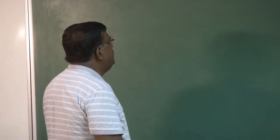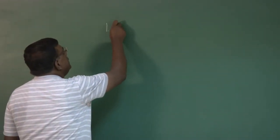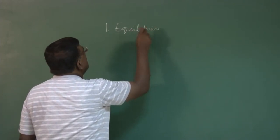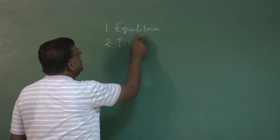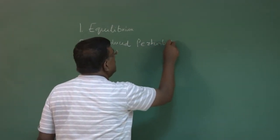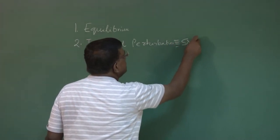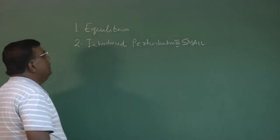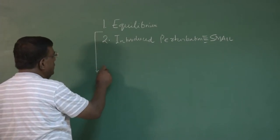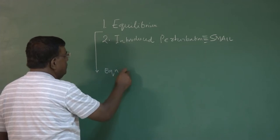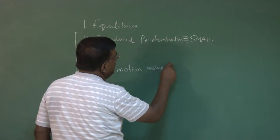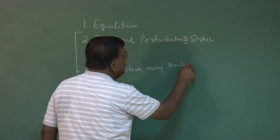So, if I write down what we did: number one, we identify the equilibrium, then introduce small perturbation. Before we introduce small perturbation, you should also notice that we have developed equation of motion using Newton's laws of motion.